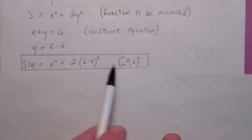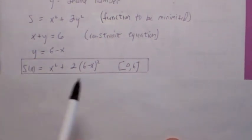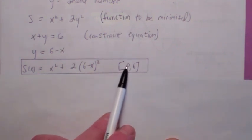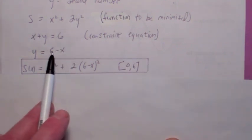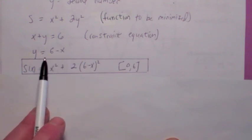Now the subtle part, and the most important, I think, is what is the domain of this function? x is a non-negative number, so the smallest x can be is zero. x can be 6 and no bigger, because if x is bigger than 6, then y is negative. So this is a closed interval problem, which is good.